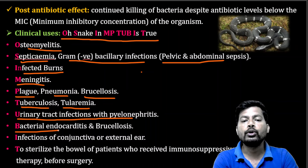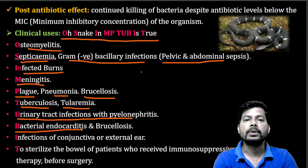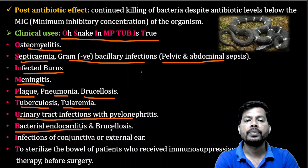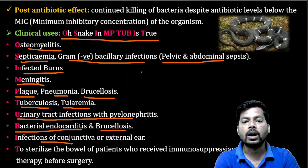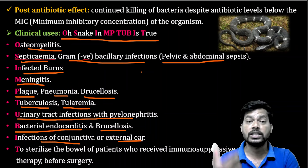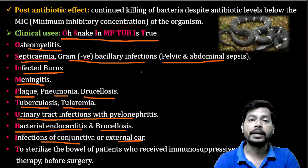Aminoglycosides are used in bacterial endocarditis — inflammation of the endocardium, which is the inner layer of the heart, caused by bacteria. They are also used for brucellosis, as already mentioned, and for infections of the conjunctiva and external ear.